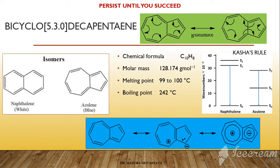Let's get into the details of our bicyclo[5.3.0]deca-pentaene, which is azulene. It is commonly known as azulene. Let's see the name and understand it. Bicyclo means 2 cycles — one ring of the bicycle has 5 carbon atoms, as you can also see in the diagram. The second ring of the bicycle has 3 carbon atoms, and 0 is for the wall of fusion.